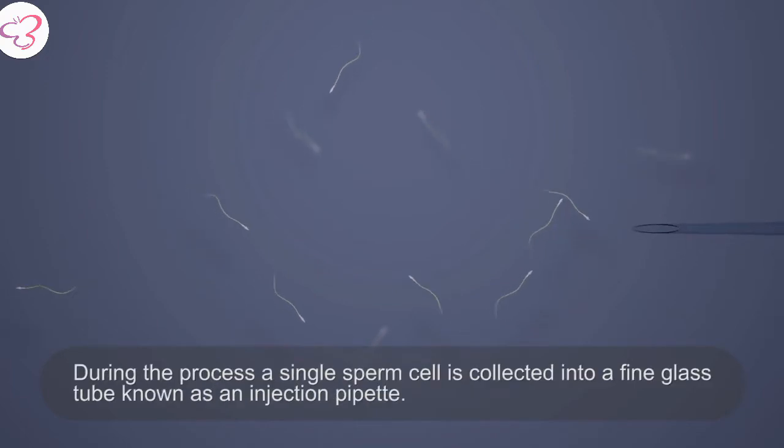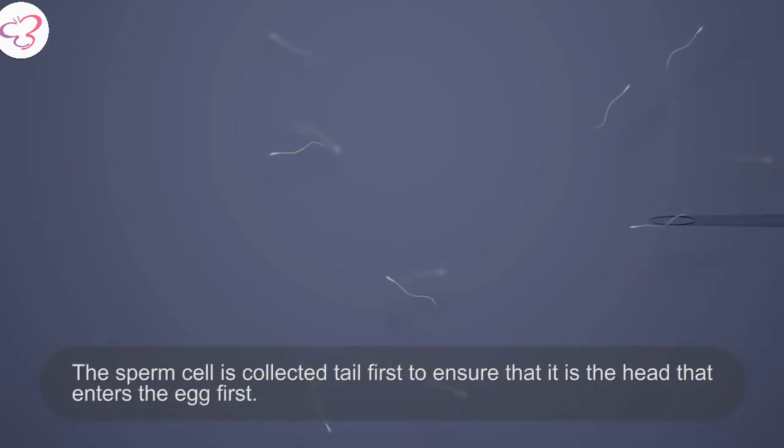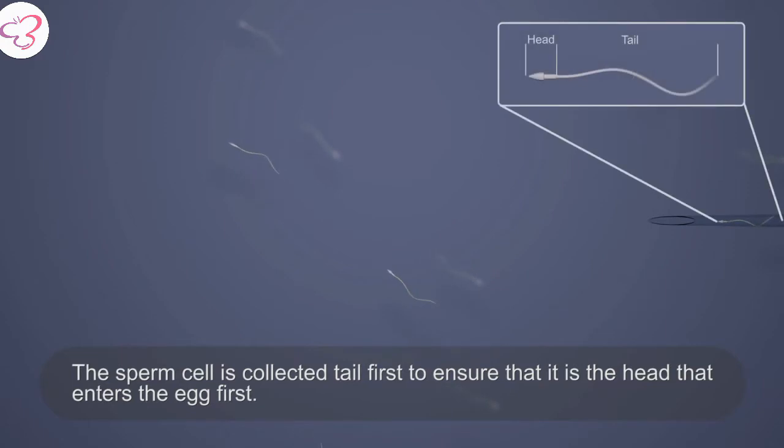During the process, a single sperm cell is collected into a fine glass tube known as an injection pipette. The sperm cell is collected tail first to ensure that it is the head that enters the egg first.